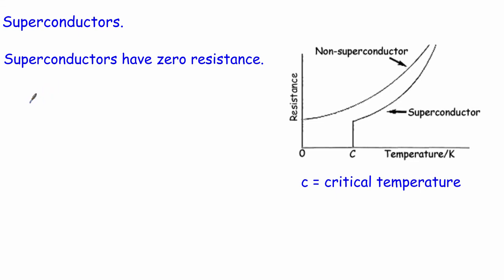For a normal conductor, increasing temperature raises resistance and decreasing temperature lowers it — but the resistance never reaches zero. For a superconductor, mercury was the first one experimentally found: you cool it down and the resistance goes down, looking like it will follow the same trend. But then you hit a certain temperature and suddenly the resistance disappears completely — it becomes exactly zero. The temperature at which this happens is called the critical temperature. You could be asked to sketch this graph, label features, or read off the critical temperature.